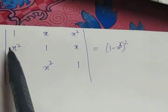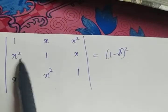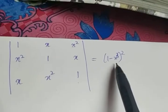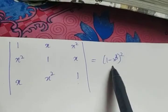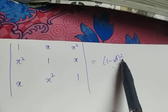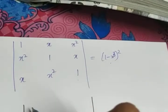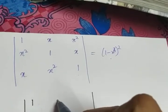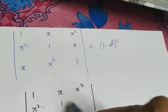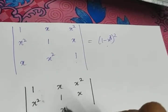The next question is the determinant with rows [1, x, x²], [x², 1, x], [x, x², 1], and we have to prove that it is equal to (1 - x³)². So take the LHS, which is that same 3×3 determinant.